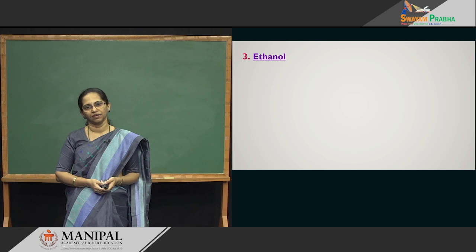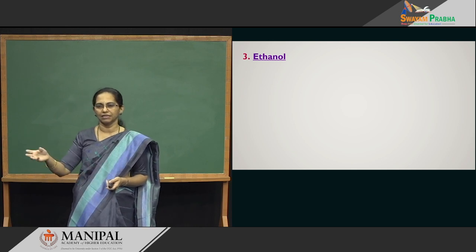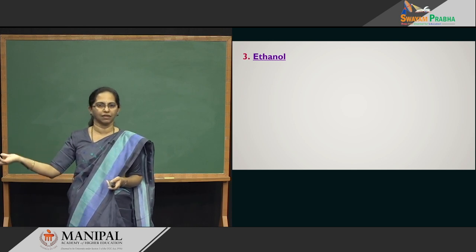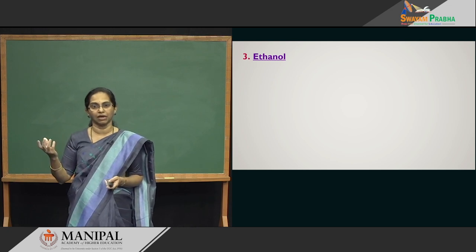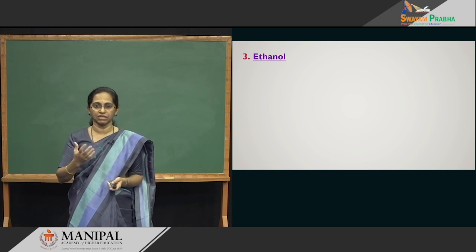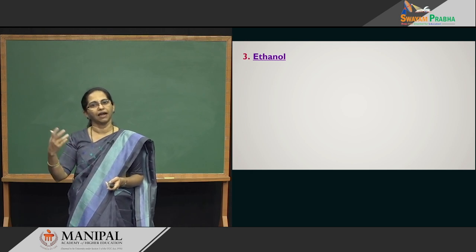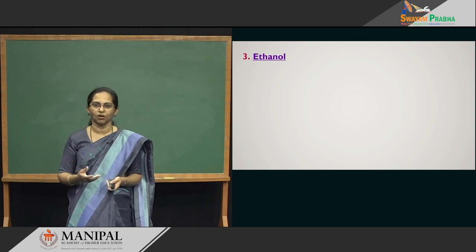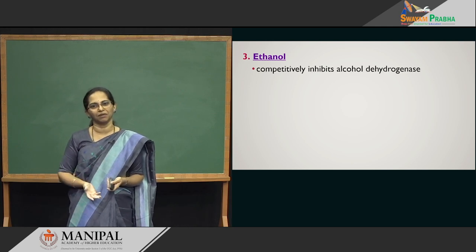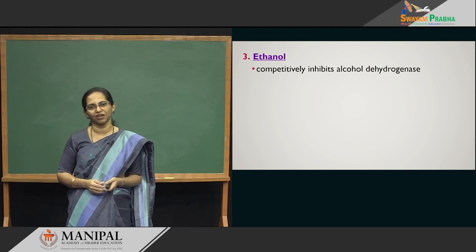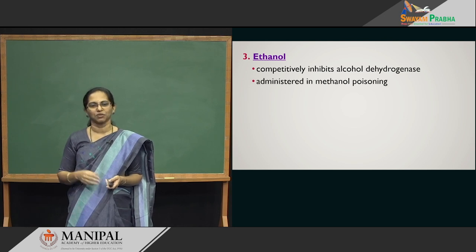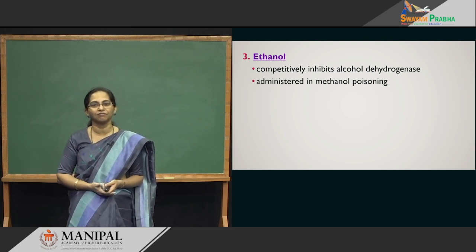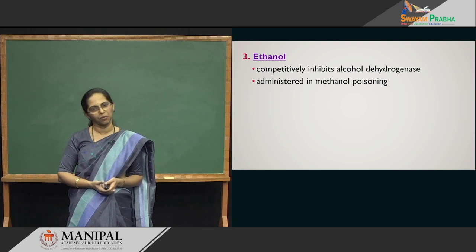Ethanol is used when a patient has consumed cheap local alcohol with high methanol content. Ethanol is a competitive inhibitor for alcohol dehydrogenase. You put the person on ethanol and it will nullify the action of methanol — that is how you try to save the person from methanol poisoning.